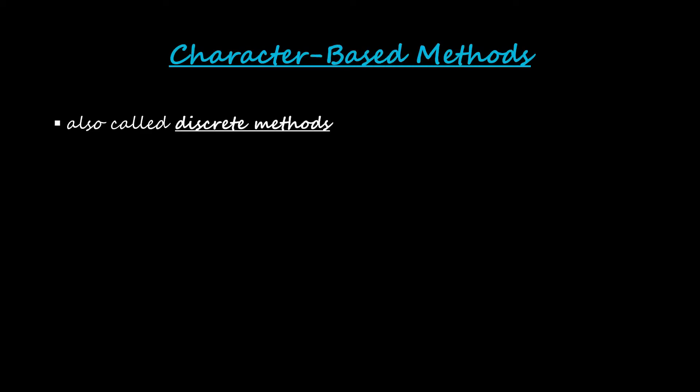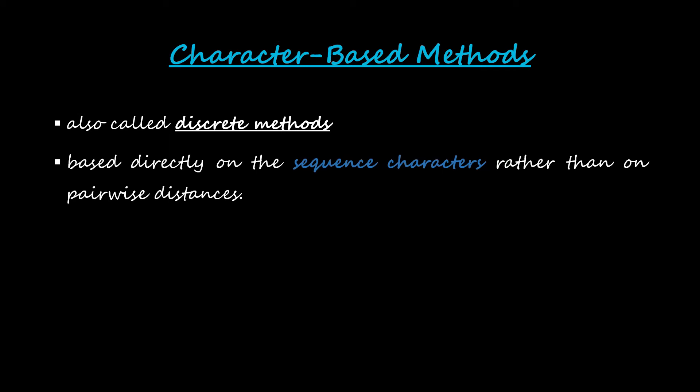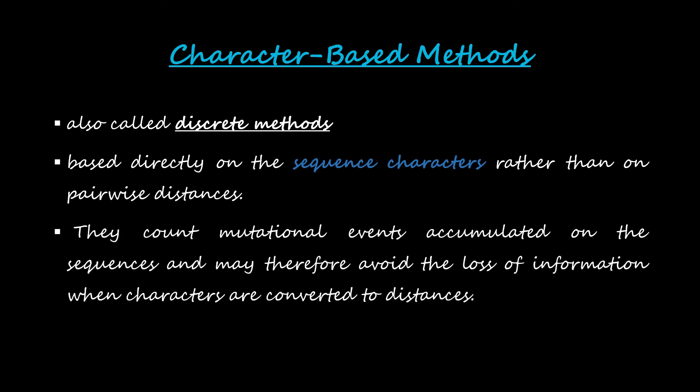Character-based methods are also called discrete methods. They are based directly on the sequence characters rather than on pairwise distances. When we say 'characters,' it means A, T, C, G — the sequence nucleotides for DNA. We can also refer to protein sequences, where we have amino acids, represented by their one-letter abbreviations. These are all sequence characters.